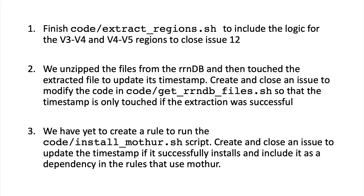As always, I have three exercises for you. First, we included rules and logic to output the alignment for full-length sequences and for v4 just now. I'm leaving the logic to extract the V3-V4 and V4-V5 regions for you. The start coordinates for those are in the issue tracker. If you have ideas for other regions you'd like to include, leave that in the comments. Then update the code and close issue 12. For the second exercise, you may recall that when we were downloading files with wget and unzip, we used touch because the timestamp on the extracted files caused problems with make.